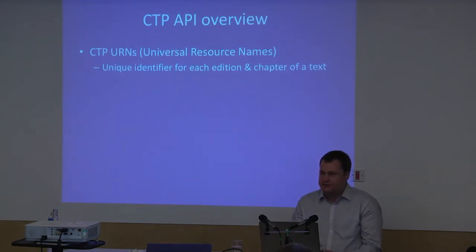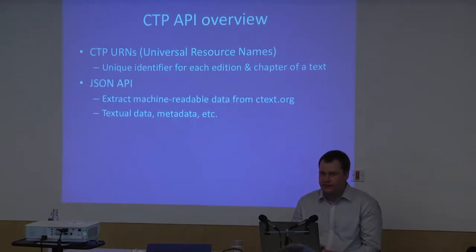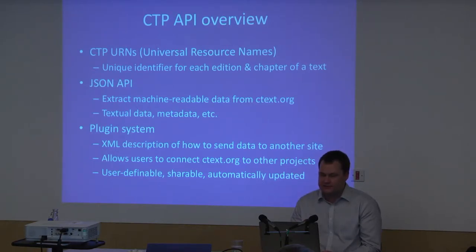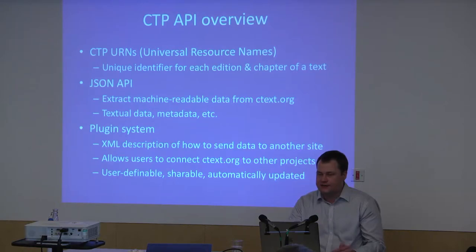The API as it currently stands consists of three major components. First, CTP-URNs — Universal Resource Names — which specify a particular textual object within CTEX: machine-readable identifiers referring to either one particular edition of a text or one particular chapter of one particular edition. Second, a JSON API which provides a mechanism for extracting machine-readable data and metadata from CTEX. Third, a plug-in system designed to allow users to create specifications for how to connect CTEX to other external projects. These plugins are completely open and freely definable — anyone can log in and create them, share them with other users, and update them when external site link structures change.